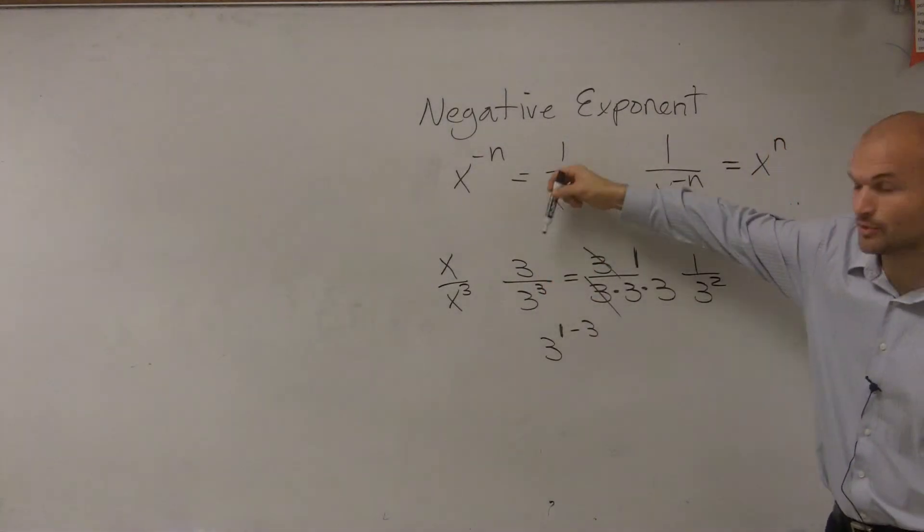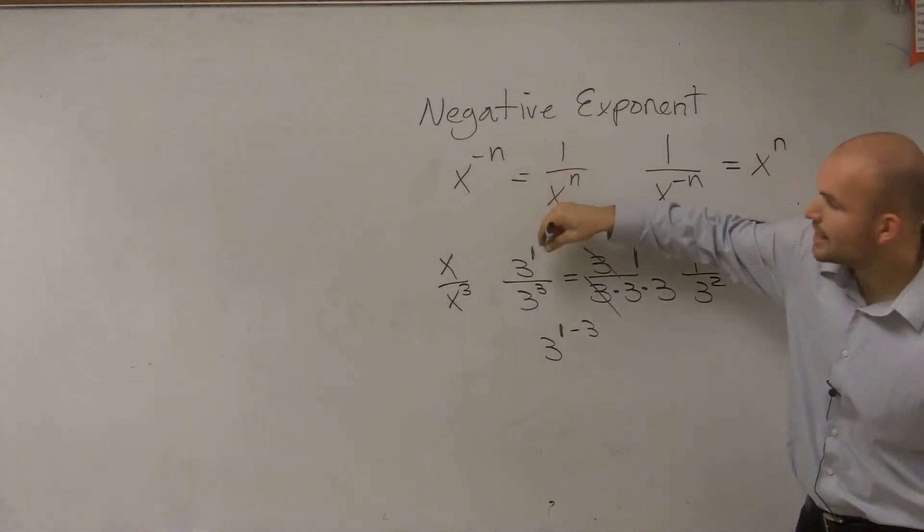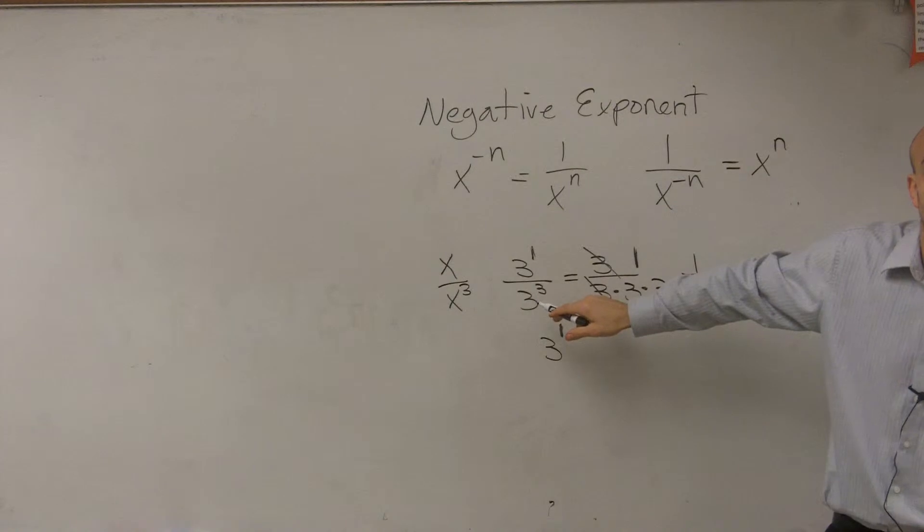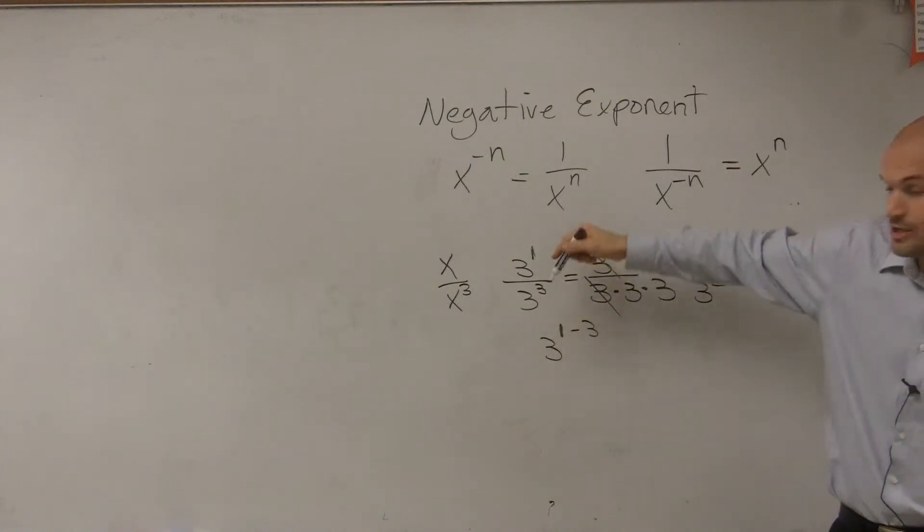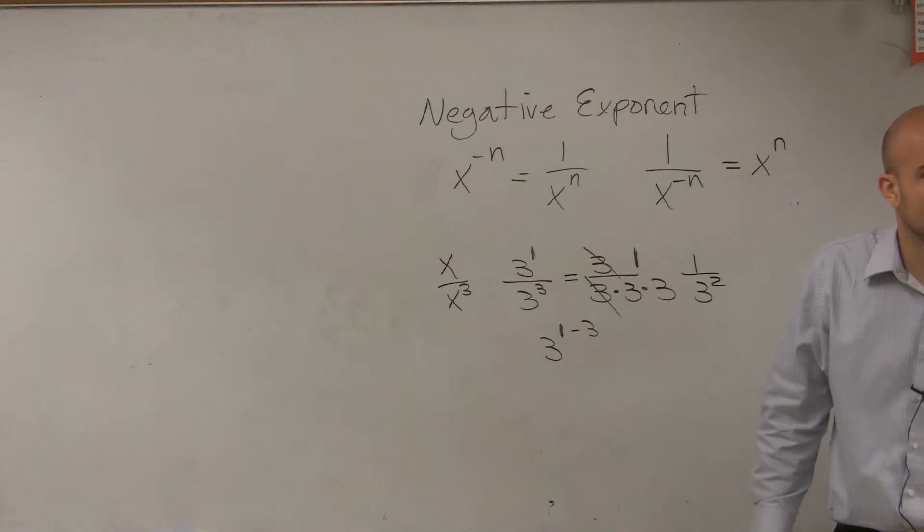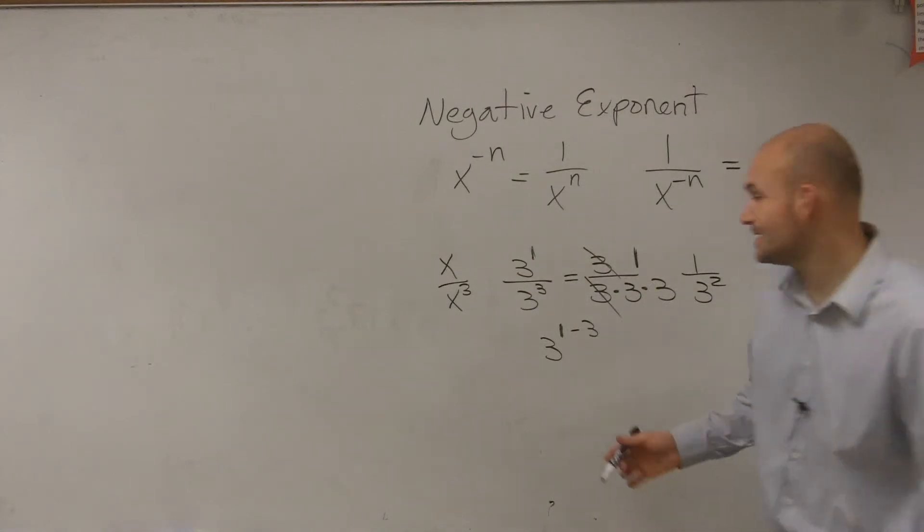you would take 3, the top numerator, which is this power, and you'd subtract it from the degree or the power in the denominator. So 1 minus 3 is what? Negative 2.